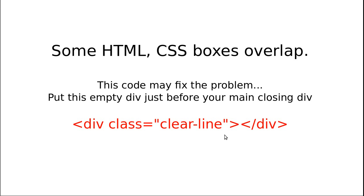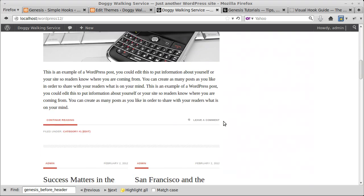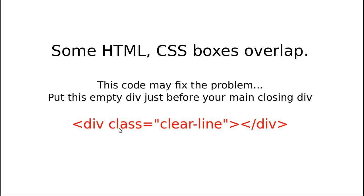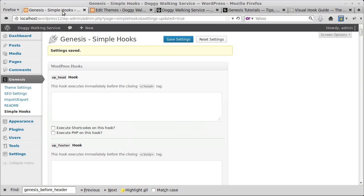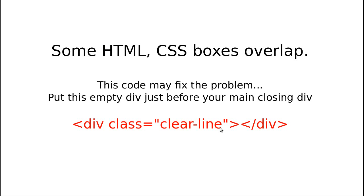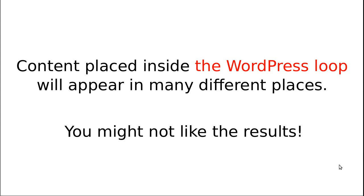Sometimes boxes overlap — it's a really common problem. If your boxes overlap, add a div with class 'clearline' — it's an empty div. Put it at the bottom of your HTML inside the main div you're using. If you know HTML you'll understand — this clearfix-style div can help stop your boxes breaking. Also be careful if you're using any hook that's inside the loop, because your content can just start appearing all over the place.